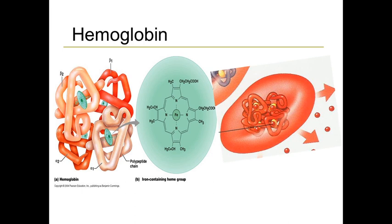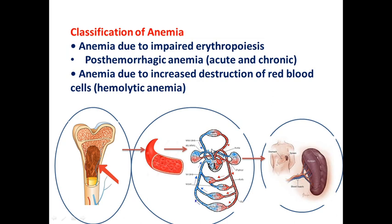Even 7 to 8 micrometer erythrocytes can pass through 3 to 4 micrometer small vessels. Each erythrocyte consists of 99% hemoglobin. Here is the hemoglobin structure, which consists of globin and heme; the heme has a porphyrin ring with iron at the center. Now let's discuss the classification of anemia.